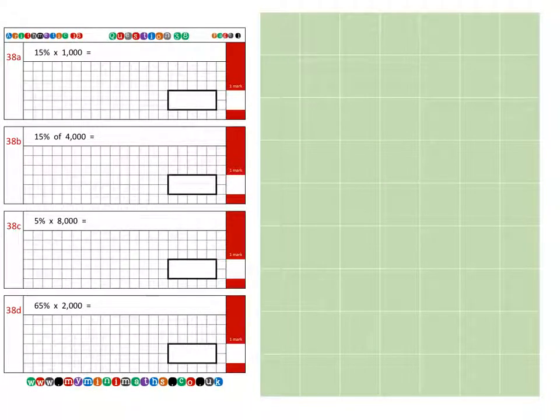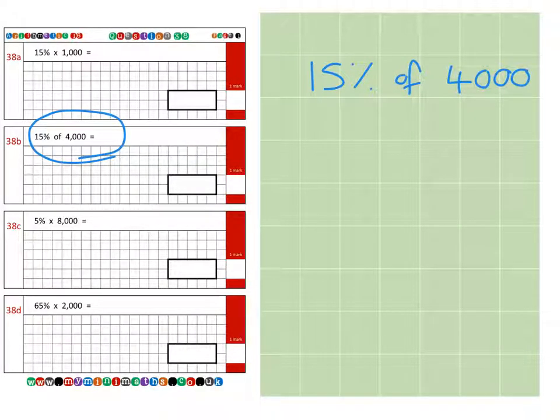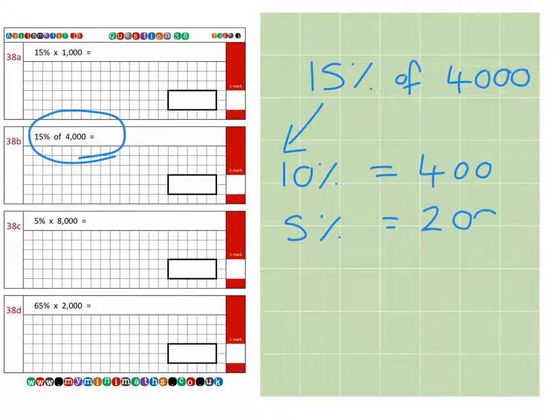On to the second question, question 38b, which is calculating 15% of 4,000. Again, we're going to calculate 10%, which equals 400, and then 5%, which is half of this, so 200. We have a final answer of 600.